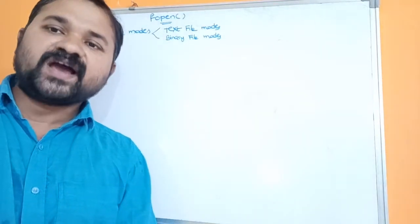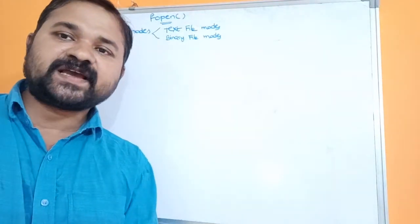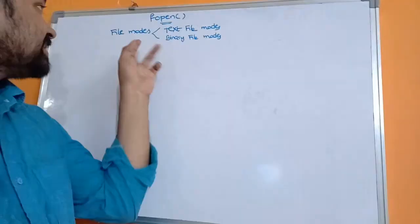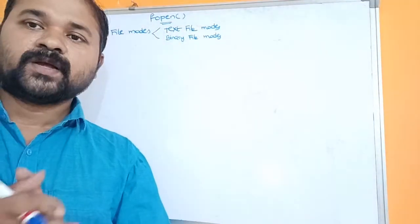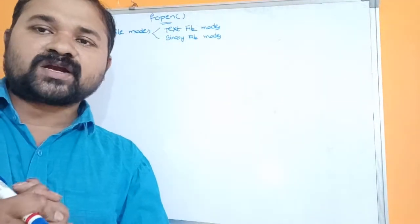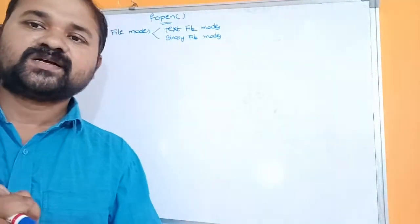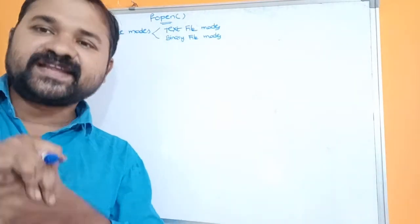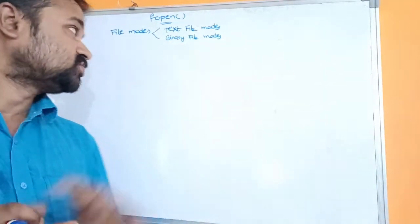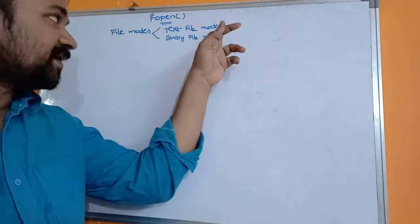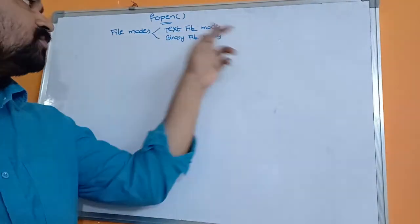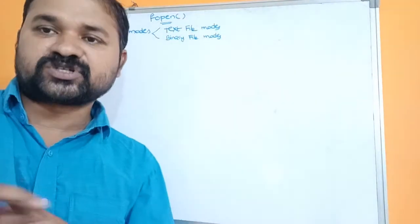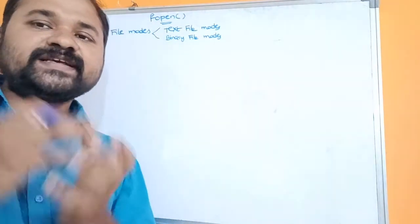In this video we are going to discuss about the fopen function as well as file modes. Mainly there are two types of files: the first one is text file and the second one is binary file. Here we will discuss what are the text file modes as well as what are the binary file modes.